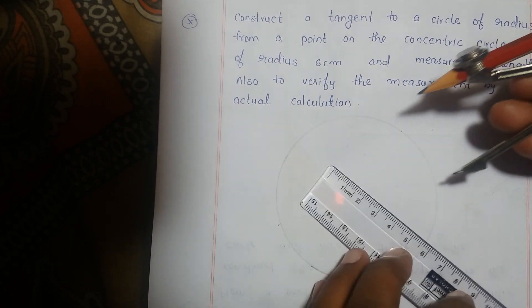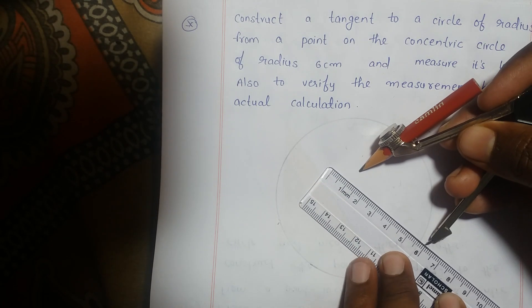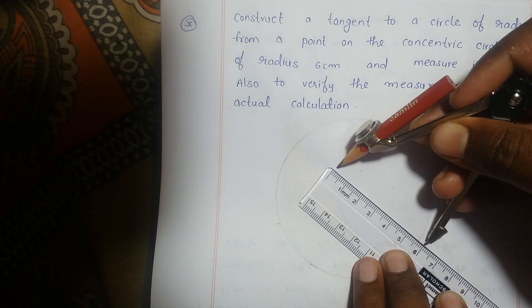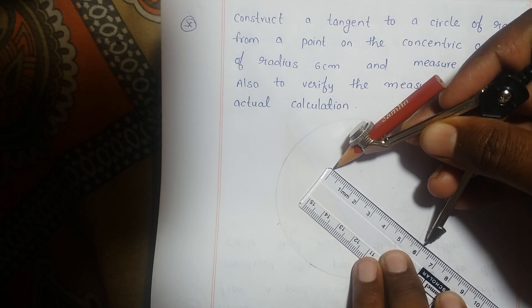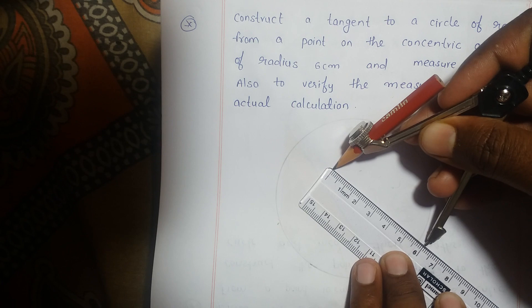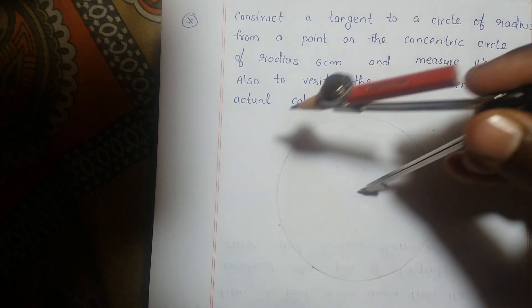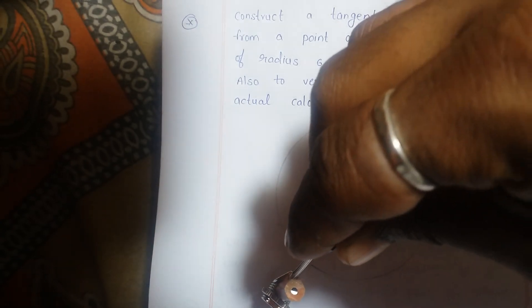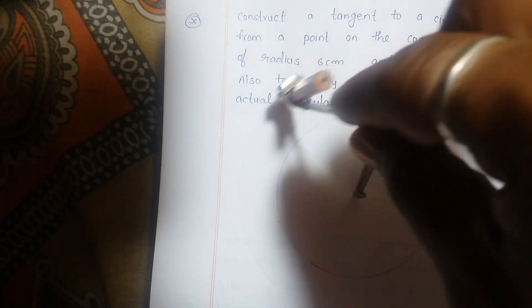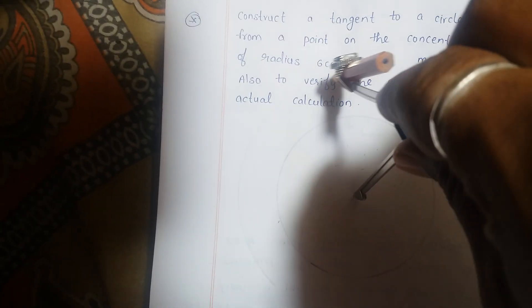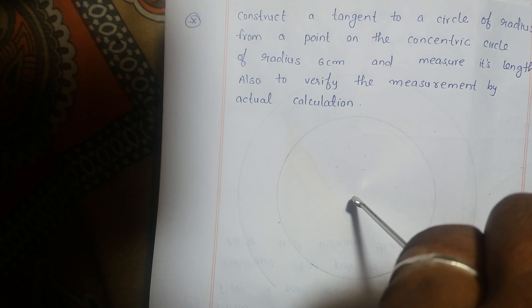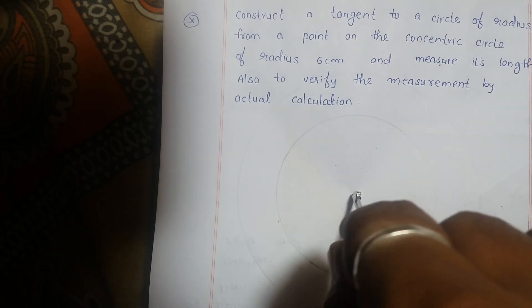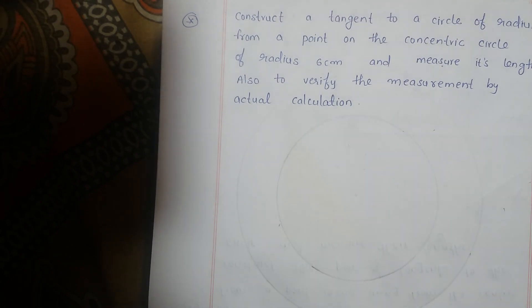Now draw a circle of radius 6 cm. Take 6 cm radius with the compass and put the needle at the same center as the first circle, then draw another circle of radius 6 cm — because both circles are concentric circles.